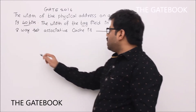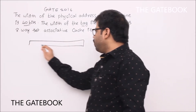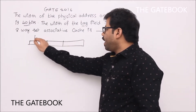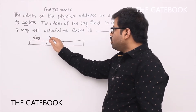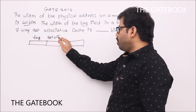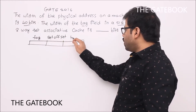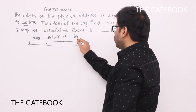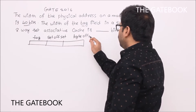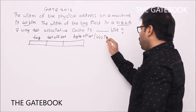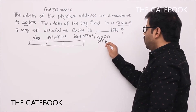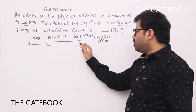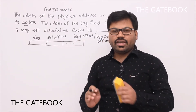We have a 40-bit physical address. We divide it into three parts: tag bits, set offset (because it is set associative mapping), and word/byte offset. The byte offset bits must be able to differentiate each byte separately within a cache block.